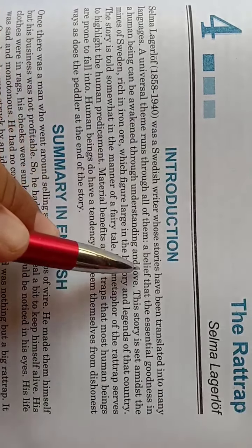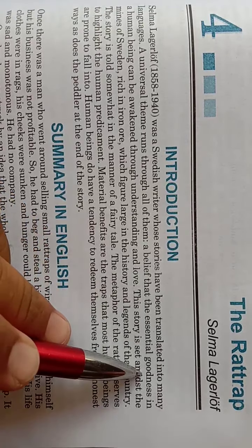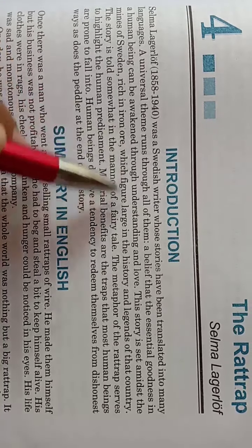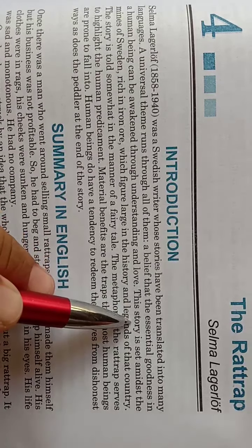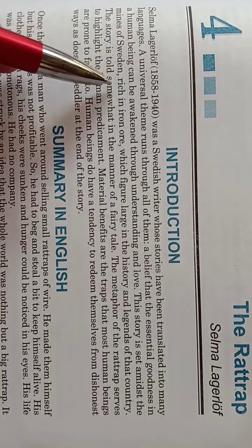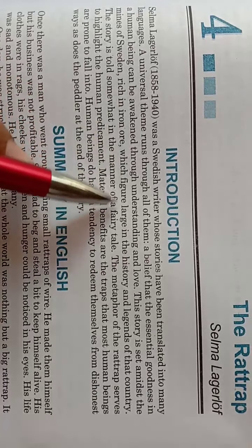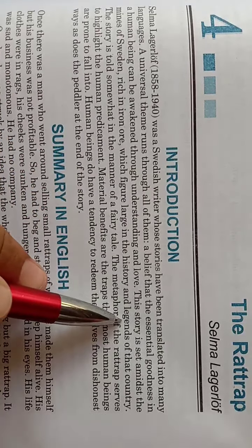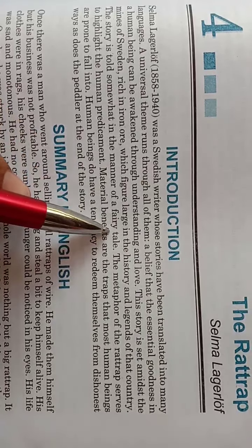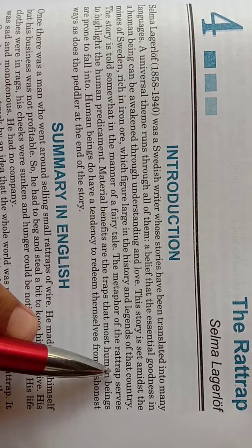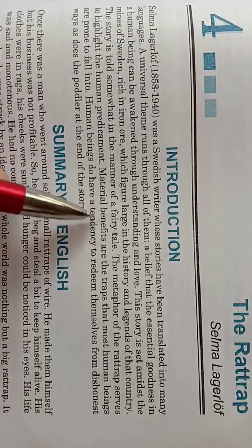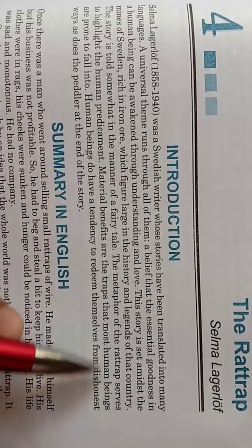A universal theme runs through all of her stories. She believed that the essential goodness in a human being can come through understanding and love. This story is set amidst the mines of Sweden, rich in iron ore, which figure large in the history and legends of the country. The story is told somewhat in the manner of a fairy tale. The metaphor of the rattrap serves to highlight the human predicament.